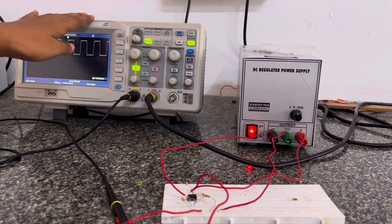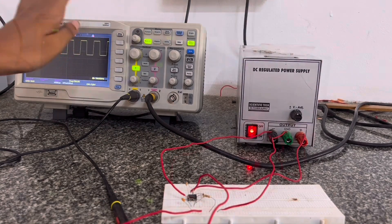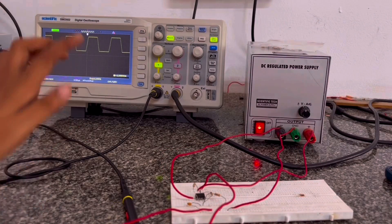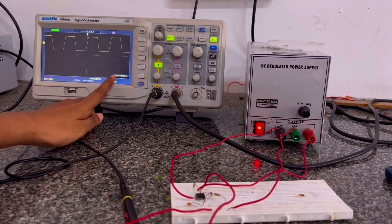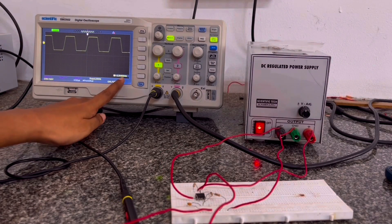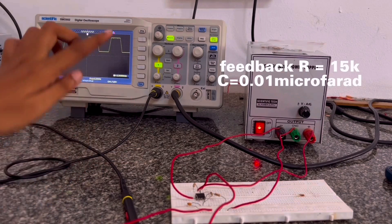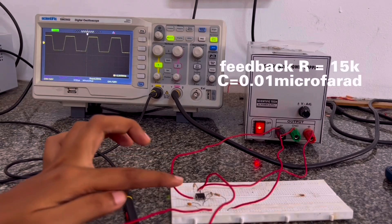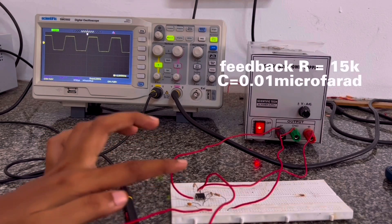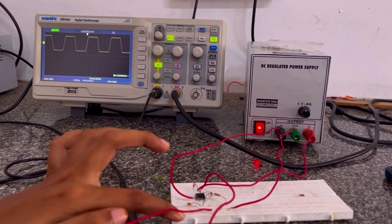We have the CRO and DSO. The astable multivibrator circuit gives a square wave output. We can see the time period is 0.3 milliseconds. We have the feedback resistance and capacitor value is 0.01 microfarad.